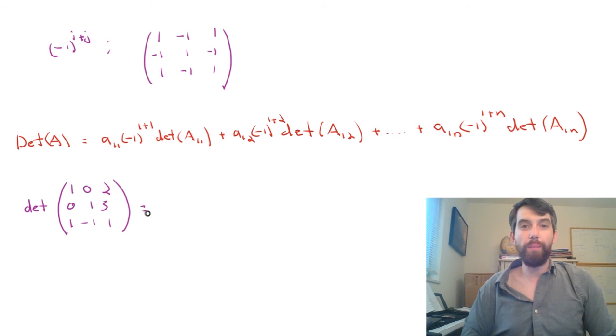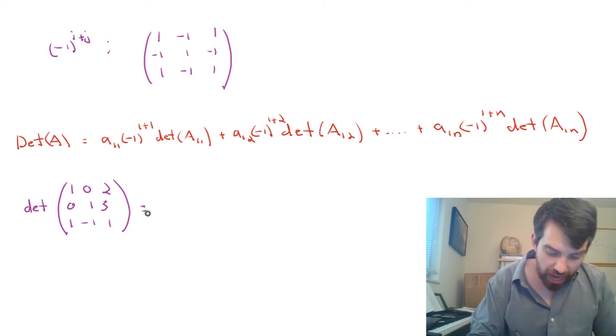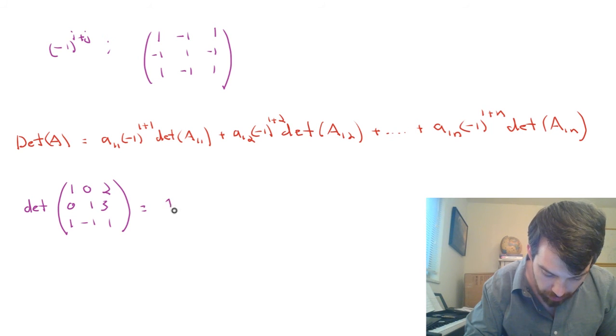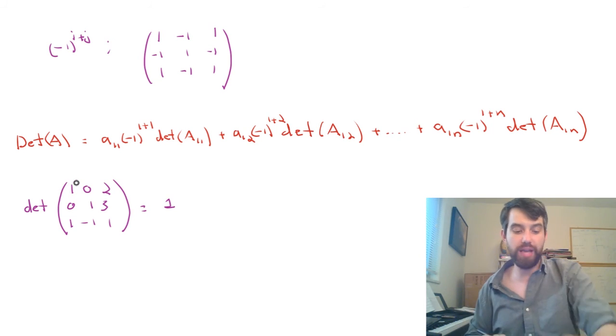Alright, first thing. I'm going along on my top row. And the first thing I'm going to write down is the A_11 component which is a 1 and it's that 1 that's hanging out right there. That's my A_11.